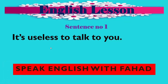Sentence number 1: It's useless to talk to you. Now 'it's' — it is or it's, apostrophe — it's has two uses. One is using it for possession, for example, 'it is Ali's pen' or 'it's Ali's pen' — that apostrophe shows possession.